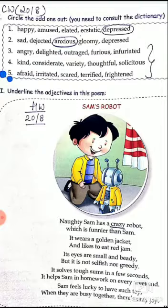Elated means very happy and proud about something, so again the same meaning. Ecstatic means very happy and excited. So all these words — happy, amused, elated, ecstatic — mean more or less the same.